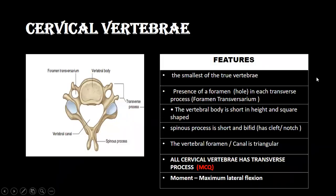I have put a picture of the cervical vertebrae on my left-hand side and the features associated with it on the right-hand side. Correlate the diagram with the features — it will make it easy to understand the basic characteristics of all the cervical vertebrae. First of all, the cervical vertebra is the smallest of the true vertebrae.